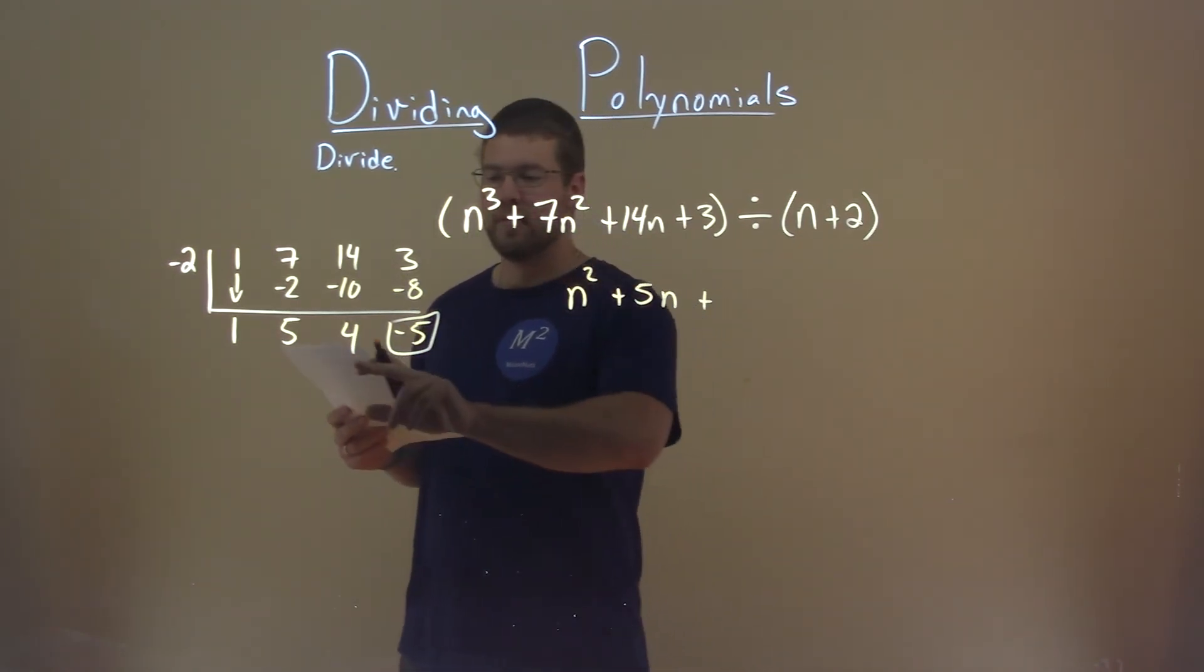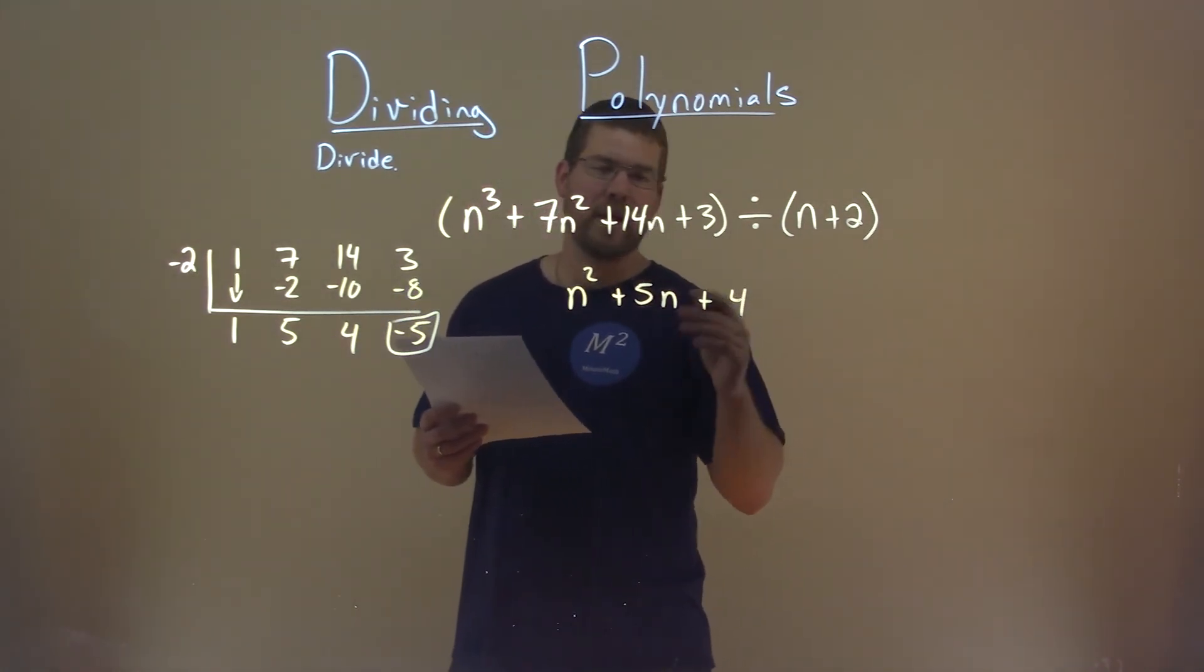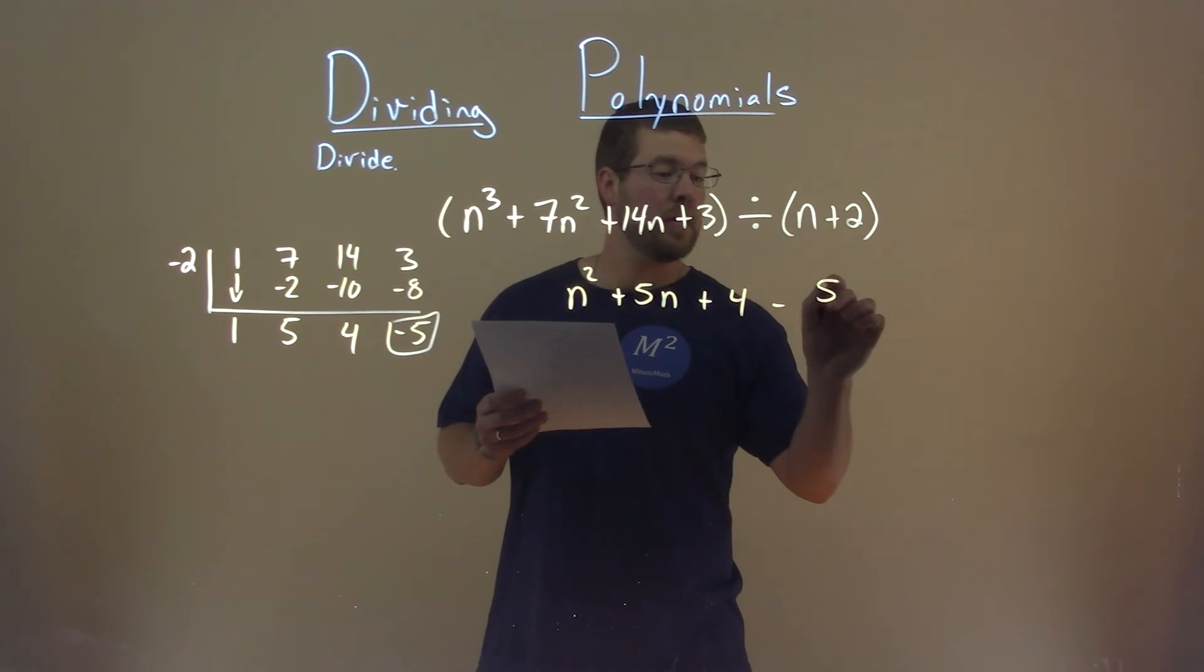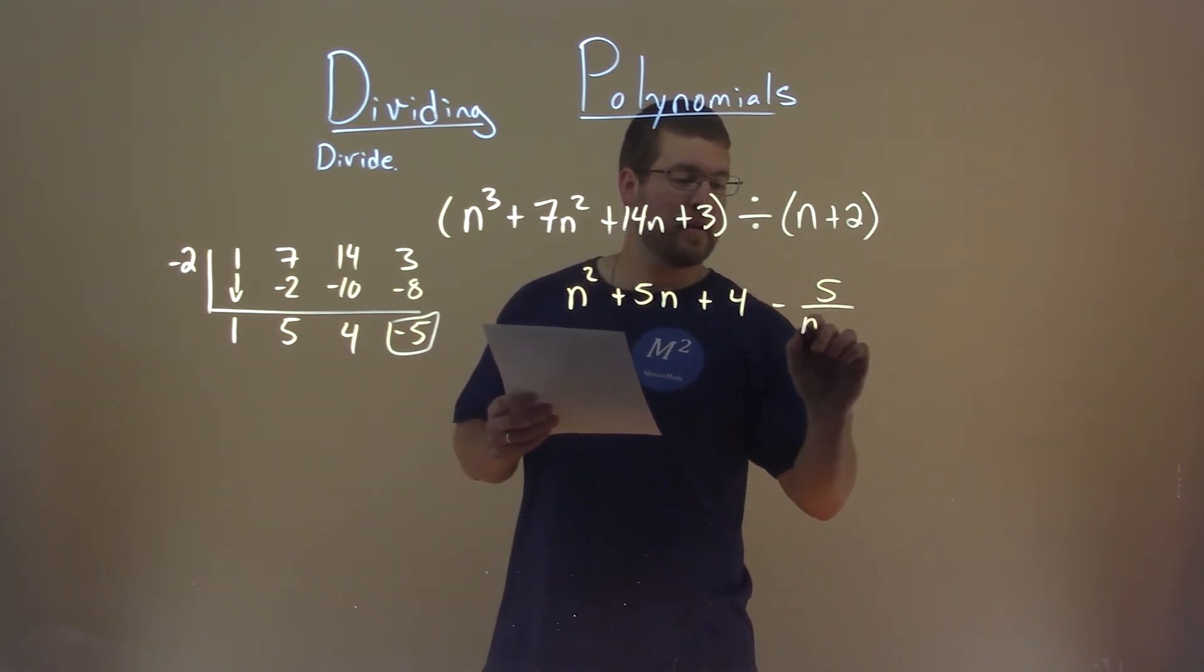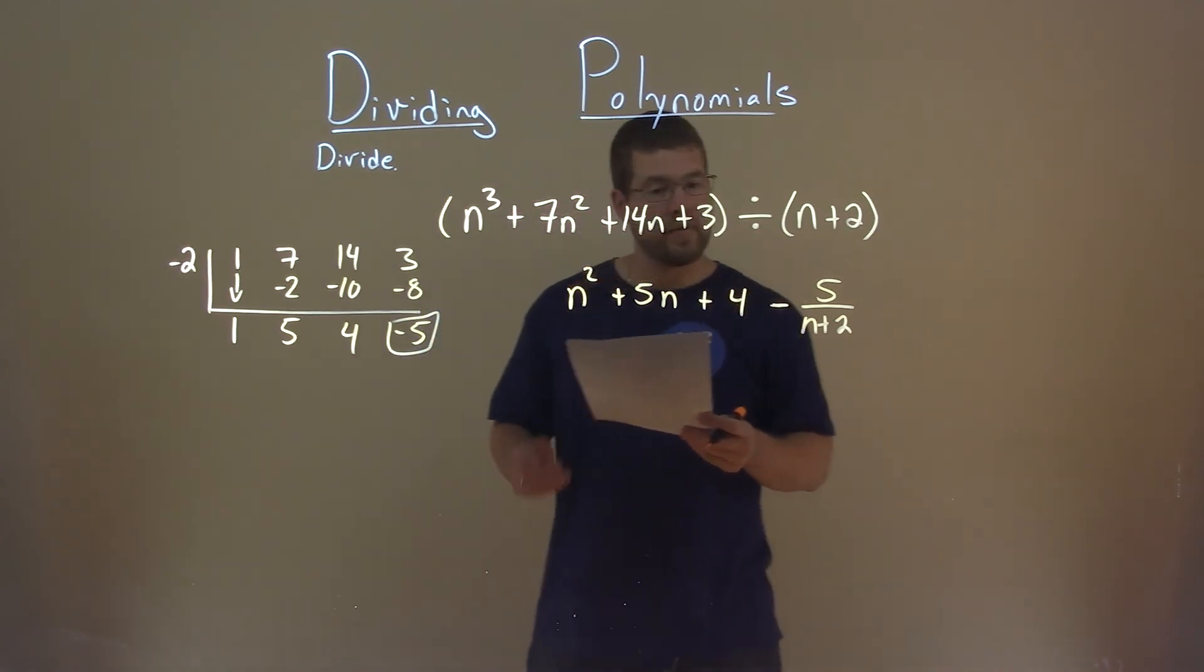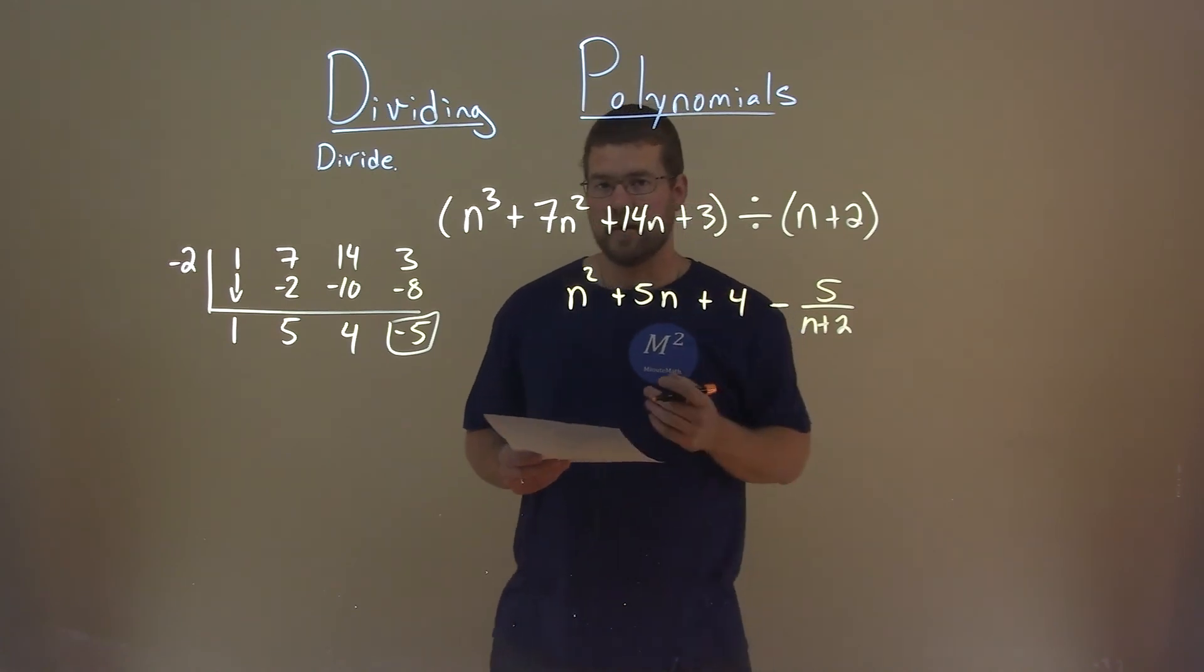Then, lastly, we have just a number 4. Well, not really, lastly, we have the remainder. We need to subtract a 5, and it's being divided by that n plus 2. And so, n squared plus 5n plus 4 minus 5 divided by n plus 2 is our final answer.